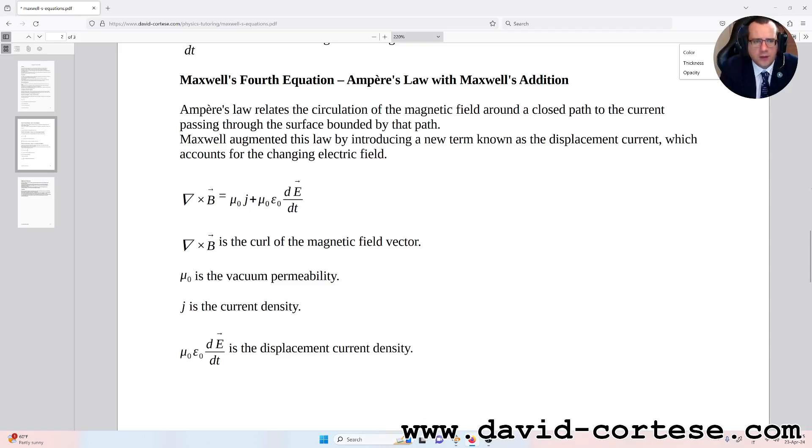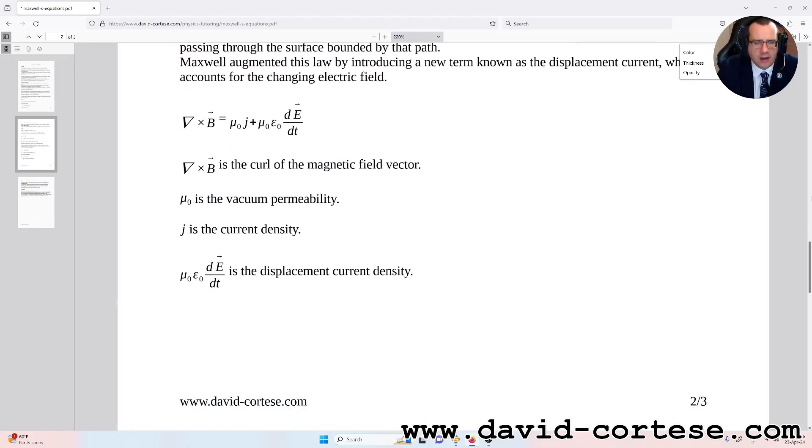So, nabla vector product B is the curl of the magnetic field vector. Mu zero is the vacuum permeability, j is the current density. Mu zero epsilon zero dE over dt is the displacement current density.